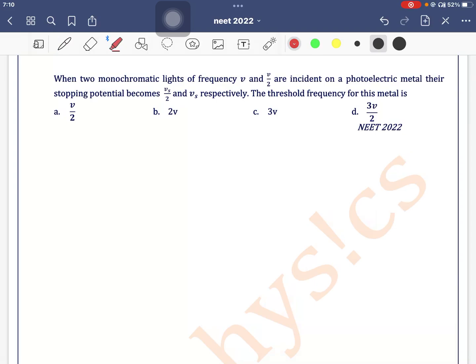When two monochromatic lights of frequency nu and nu by 2 are incident on a photoelectric metal, their stopping potential becomes Vs by 2 and Vs. The threshold frequency for this metal is.